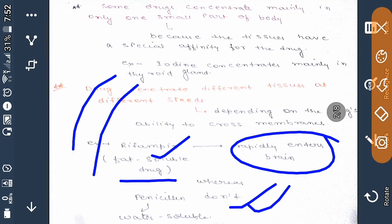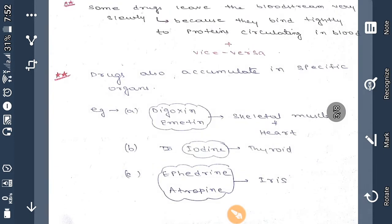As you know, plasma membrane is made up of lipid, so the lipid-soluble drug will easily pass through the plasma membrane. Moving to the next slide, some drugs leave the bloodstream very slowly because of certain reasons.